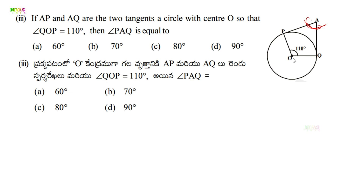The center is O, and the angle at O is 110°. At the points of contact, by Theorem 9.1, the radius is perpendicular to the tangent, so angle at P = 90° and angle at Q = 90°. Now, A, P, O, Q form a quadrilateral, and the total angles of a quadrilateral equal 360°.